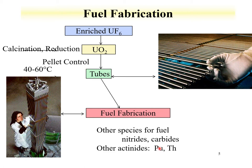Plutonium, which is fissile, and thorium—where thorium-232 capturing a neutron creates thorium-233, decaying to uranium-233 through protactinium-233—are also relevant fuel cycle materials.